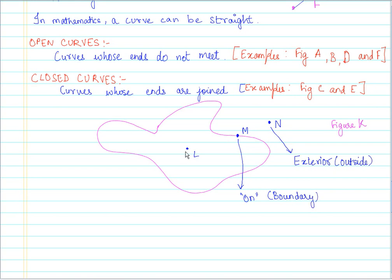This point M here is said to be on the curve. Or we can say it is on the boundary. And then we have this point which is L. This point L is inside the curve. Or it is said to be in the interior of this closed curve. It is said to be interior.